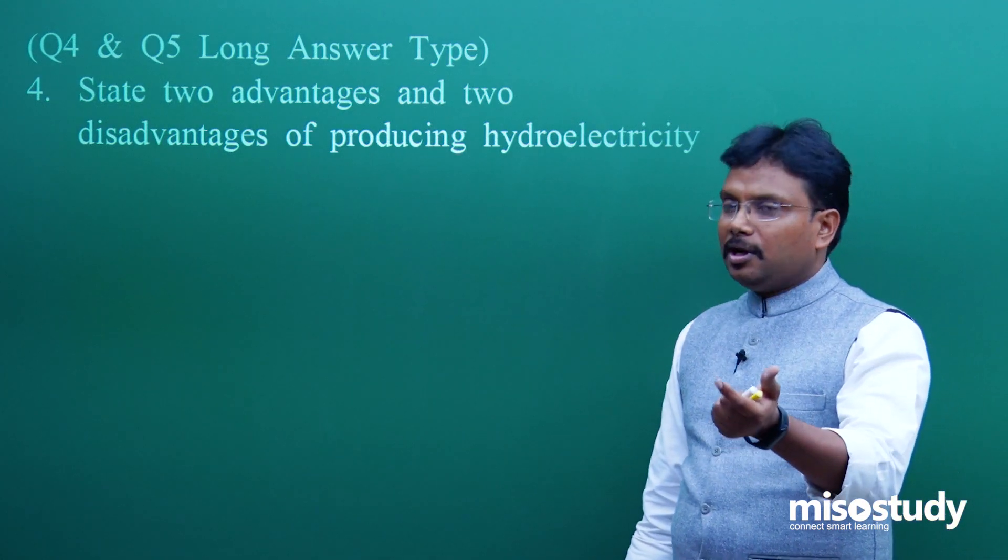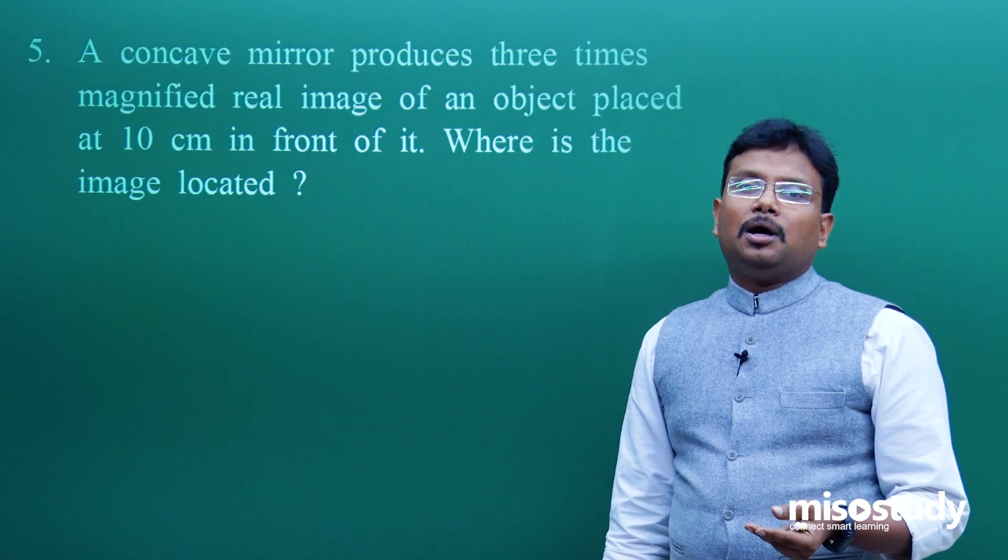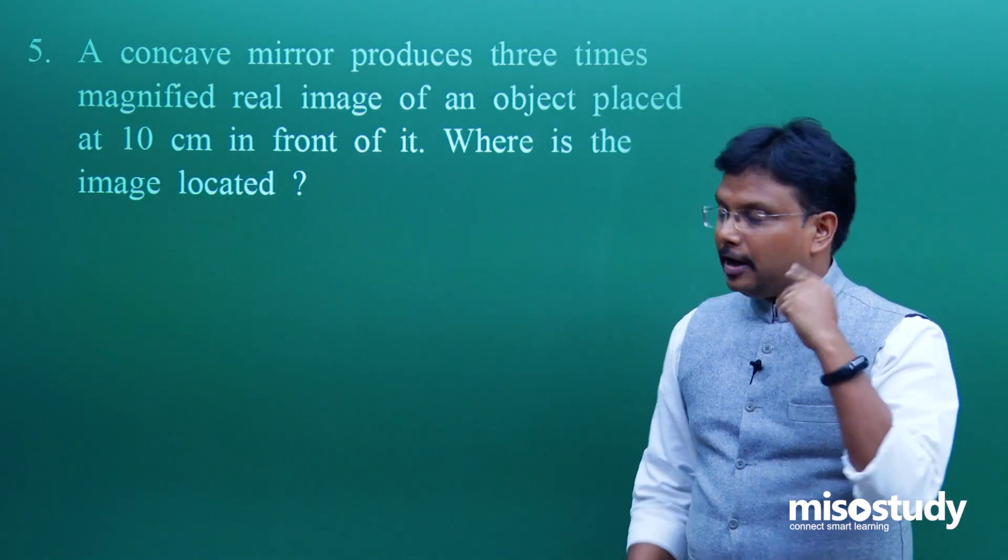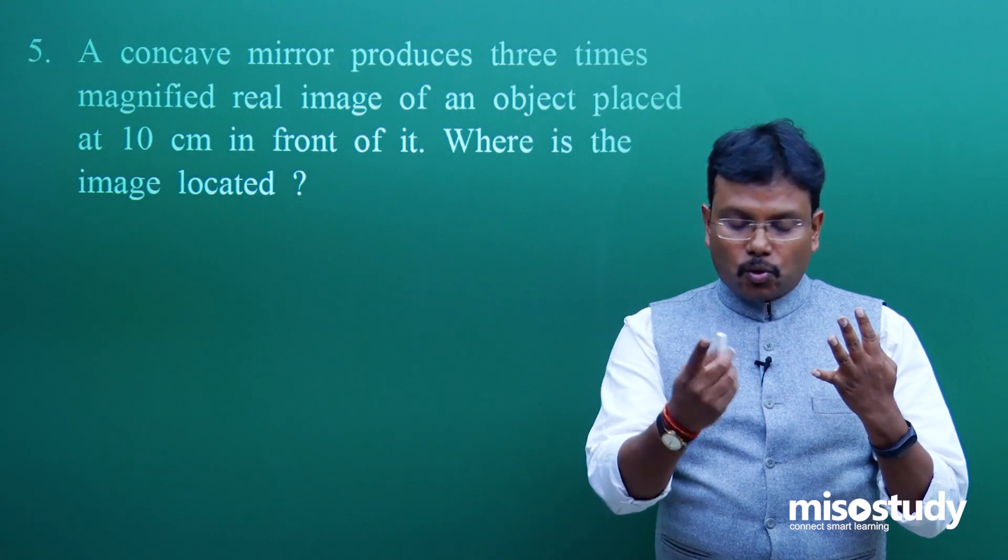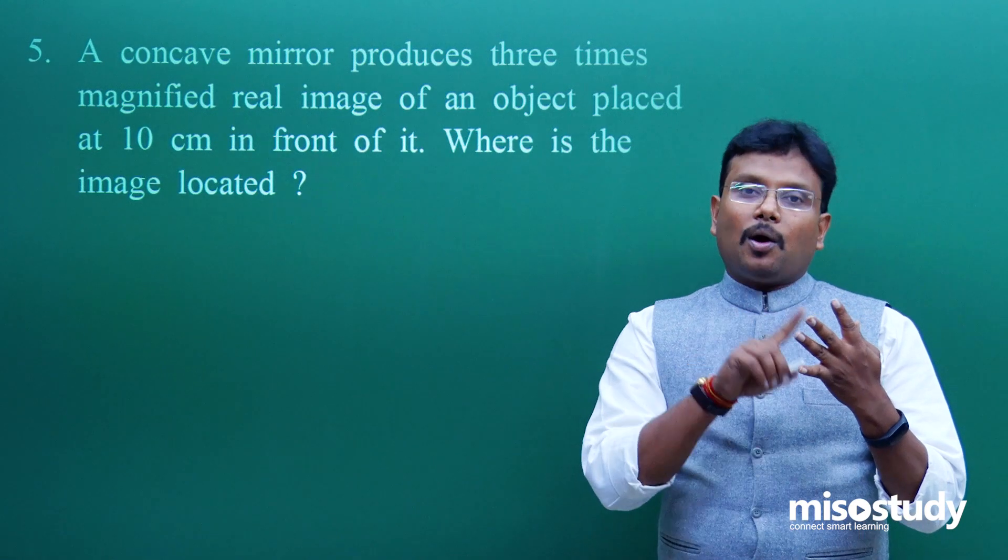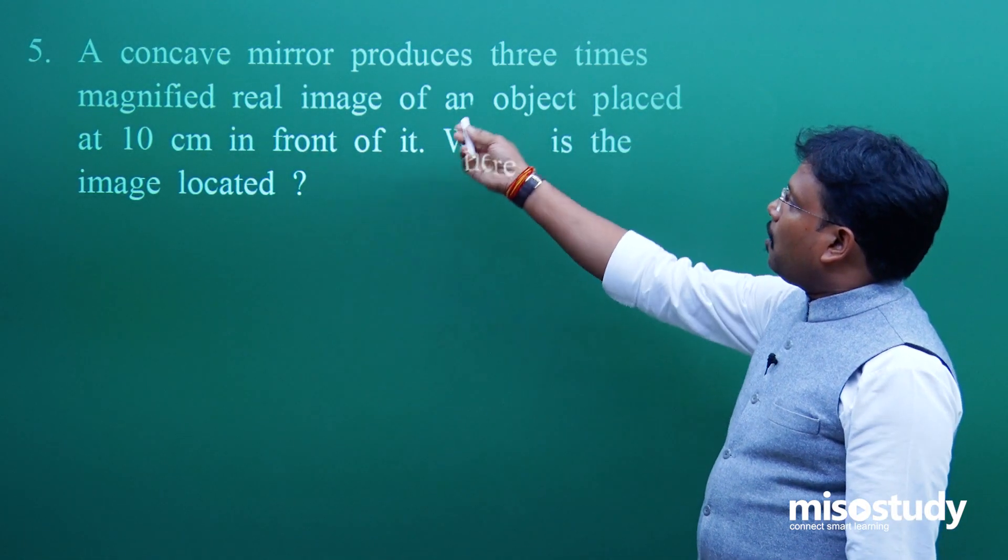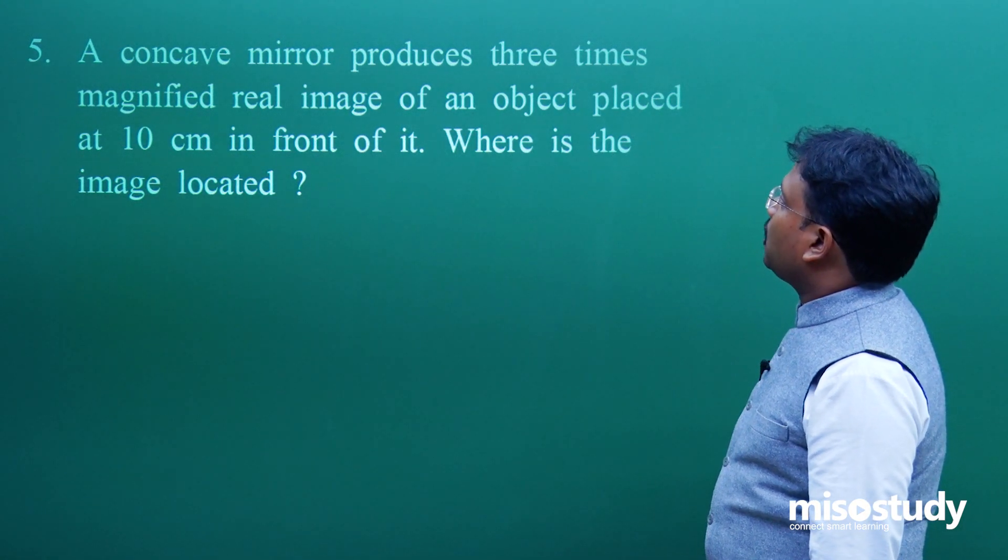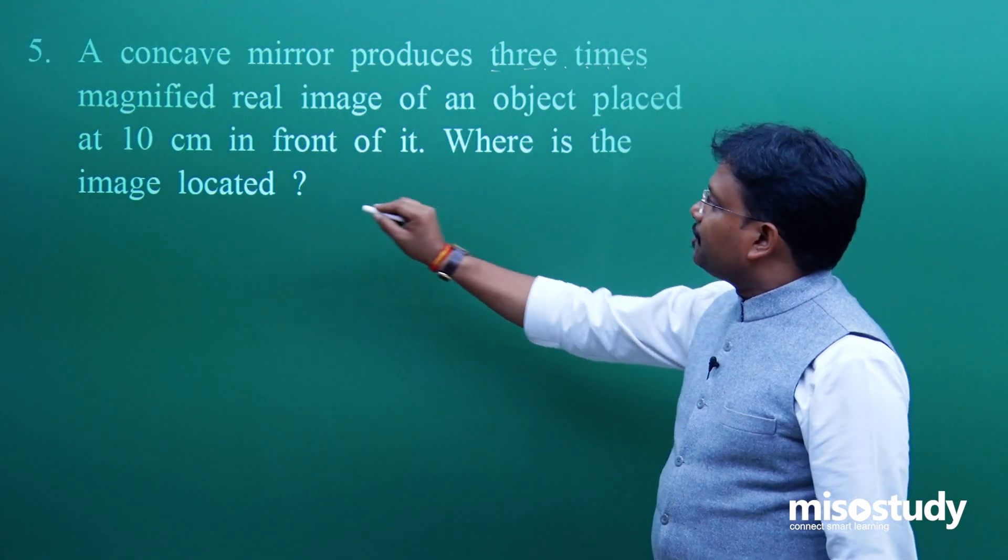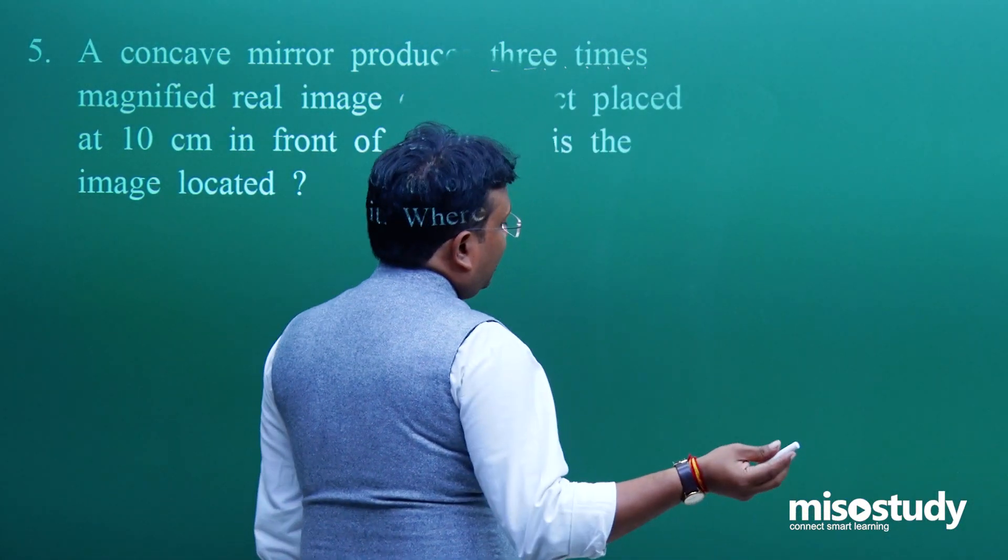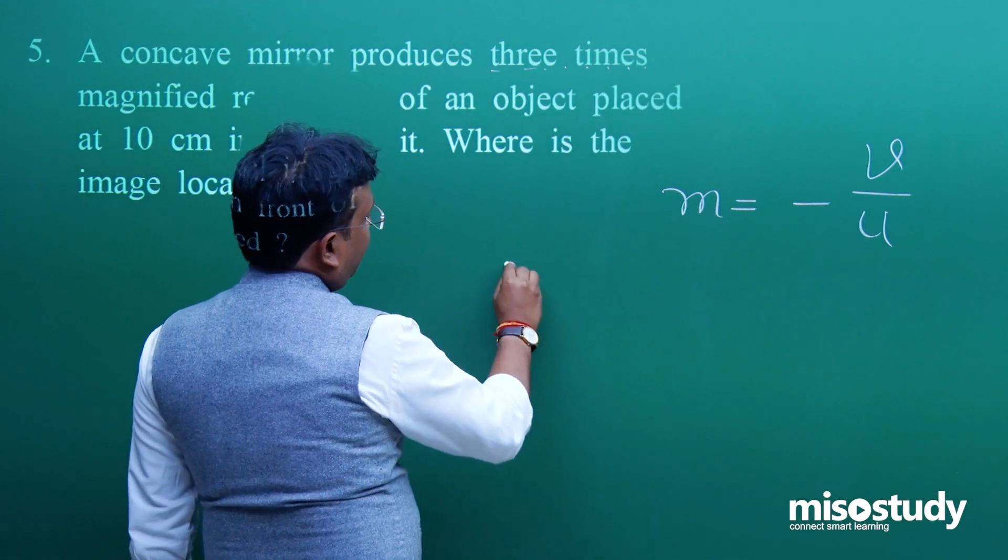Then next question, also in the long answer category, is a type of numerical from your two chapters. One is your reflection of light, another is refraction of light. A concave mirror, now I think I should mention one important aspect over here. Plane mirror is in your course, concave mirror, convex mirror, and in your lens, concave lens, convex lens. I think you should be slightly careful with these devices. A concave mirror produces 3 times magnified real image of an object placed at 10 centimeter in front of it. Now the catch term is 3 times. Where is the image located?